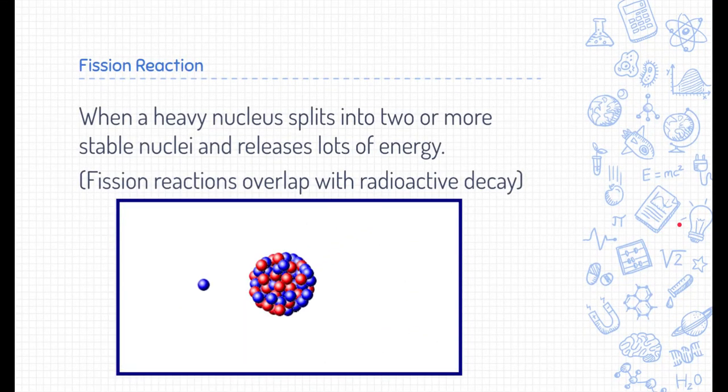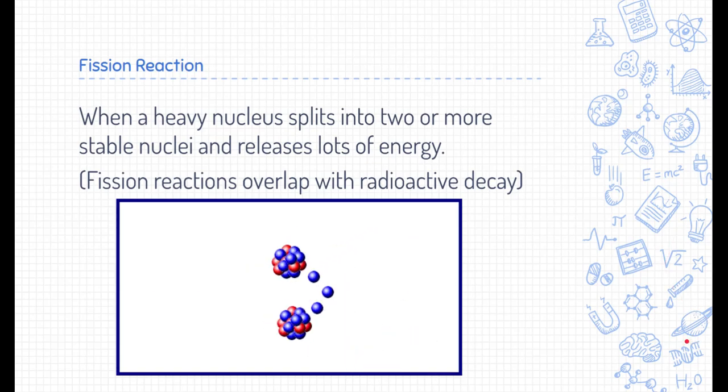The second type of nuclear reaction is a fission reaction. This reaction has a lot of overlap with radioactive decay. You can see here that the definition is when a heavy nucleus splits into two or more stable nuclei and releases lots of energy. For our case, that's kind of the main difference between radioactive decay and fission. Fission typically releases tons and tons of energy, where radioactive decay may or may not release a lot of energy. So there's a lot of overlap between the two.